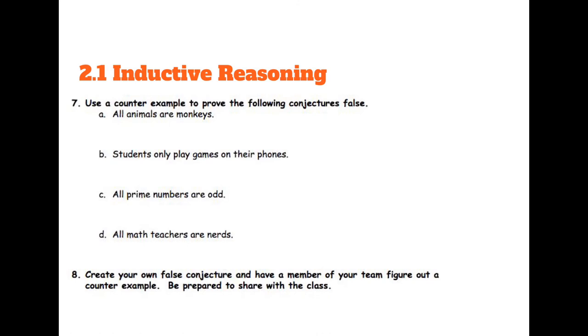Alright, counter-examples are used to prove conjecture is false. And all you need is one counter-example and then the conjecture is false. So it doesn't even matter if there's 100 things that prove it correct. As long as you have one way to prove it false, then the whole conjecture itself is false. So can you think of counter-examples for the following statements? All animals are monkeys. So can you think of an animal that is still an animal but would not be a monkey?